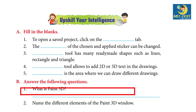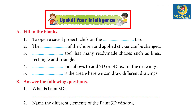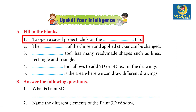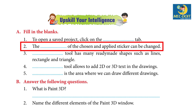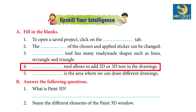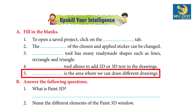Upscale your intelligence. A — Fill in the blanks: 1. To open a saved project, click on the — Answer: Menu. 2. The — of the chosen and applied stickers can be changed — Answer: Opacity. 3. — tool has many ready-made shapes such as lines, rectangles, and triangles — Answer: 2D Shapes. 4. — tool allows to add 2D or 3D text in the drawings — Answer: Text Tool.